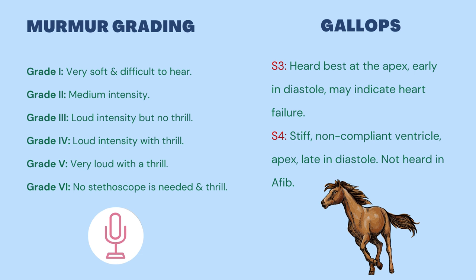When documenting murmurs, you must give it a grade from 1 to 6. Grade 1 is very soft and difficult to hear. Grade 2, medium intensity.